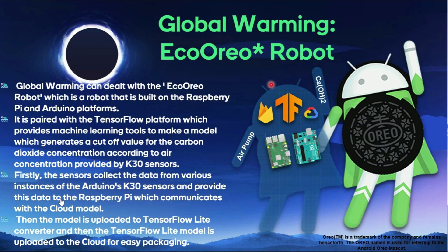The robot gets the carbon dioxide concentration — it reads values like 1.3, 1.5, and keeps fluctuating. I get the concentration from many instances or from many robots placed at various locations. The Arduino gets the sensor data and once it gets sensor data from various instances, all of them are going to power the Raspberry Pi. The Raspberry Pi communicates with the TensorFlow model stored in Google Cloud using Firebase. Once I get this data, the TensorFlow model checks what the required carbon dioxide level is, and then sends data back to the Raspberry Pi, which sends it to the Arduino, which decides whether to turn on the air pump or not.